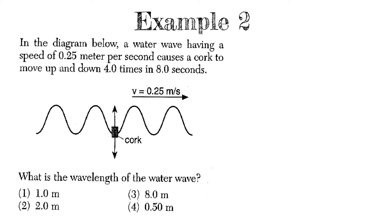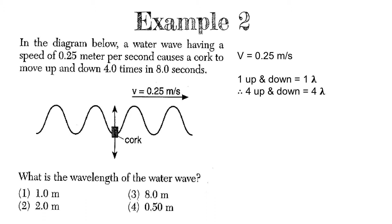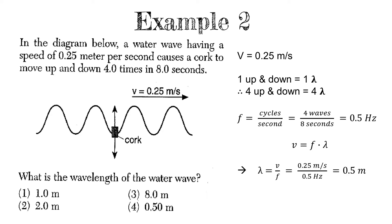For a wave speed example: a water wave with a speed of 0.25 m/s causes a cork to move up and down four times in eight seconds. Every time the cork moves up and down, one wave passes through, so four waves pass in eight seconds, giving a frequency of 0.5 Hz. Using v = fλ, solving for lambda: λ = v/f = 0.25 / 0.5 = 0.5 meters. So the wavelength is 0.5 meters.